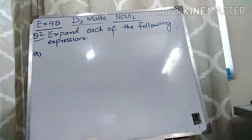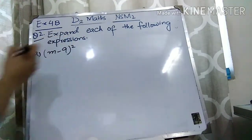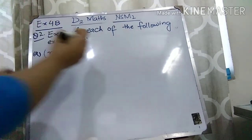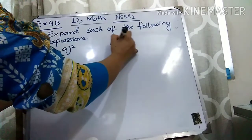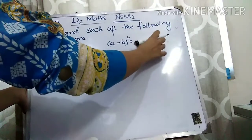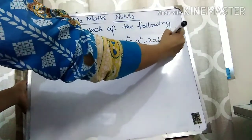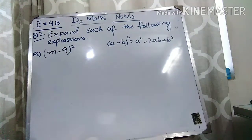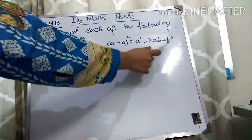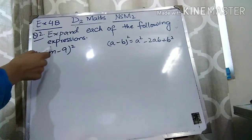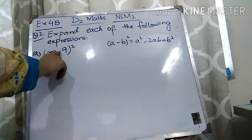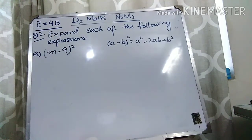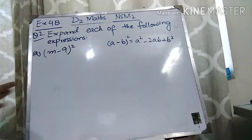Question number 2 is: Expand each of the following expressions. Part A is (m minus 9) whole square. Remember that the formula we have to use in this question is A minus B whole square, which is equal to A square minus 2AB plus B square. In question number 1, we used the formula (A plus B) whole square. But here we will use the formula (A minus B) whole square, so it is equal to A square minus 2AB plus B square. So in (m minus 9) whole square, you have to put the values into this formula.